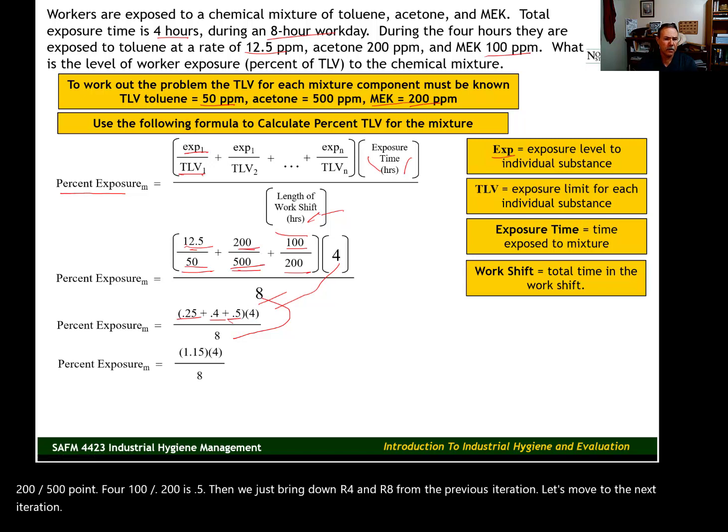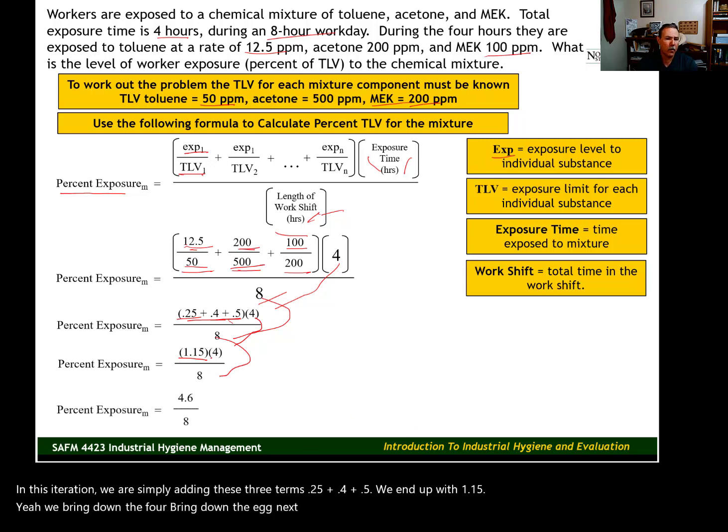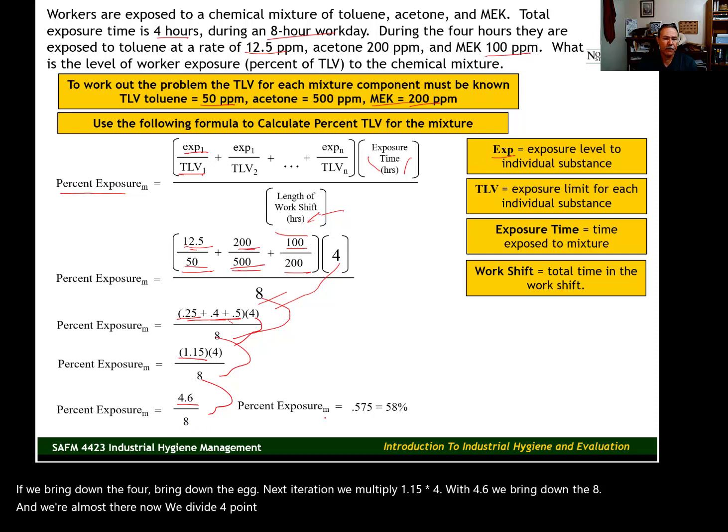In this iteration, we are simply adding these three terms: 0.25 plus 0.4 plus 0.5. We end up with 1.15. We bring down the 4 and bring down the 8. Next iteration, we multiply 1.15 times 4. We end up with 4.6. We bring down the 8.